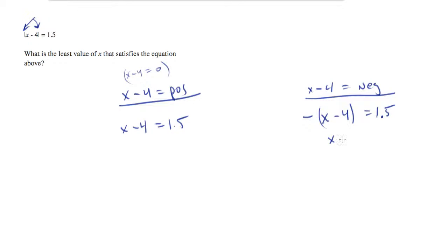And I'm going to simplify this to x minus 4 equals negative 1.5. Now we have two algebraic expressions which we can simply solve. So I end up with x, in this particular case, is 5.5. In this case, I end up with x equals 2.5.